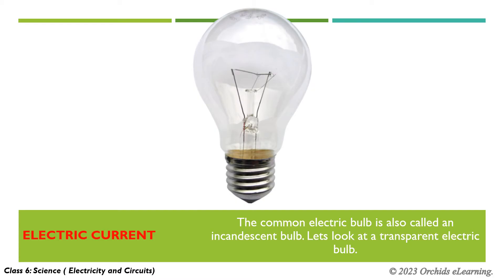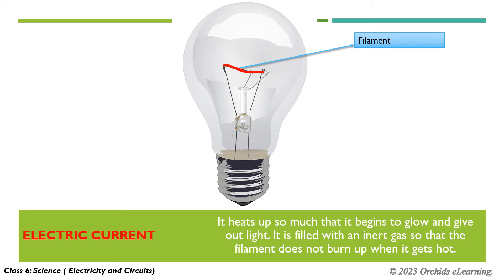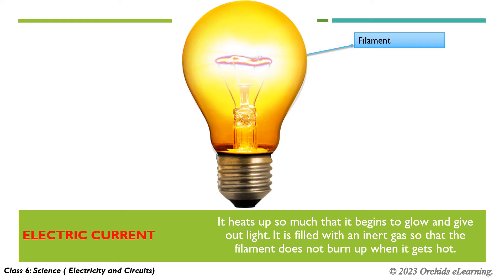The common electric bulb is also called an incandescent bulb. Inside a transparent electric bulb, you will see a thin filament — a very thin metal wire. The filament heats up when an electric current is passed through it. It heats up so much that it begins to glow and give out light. It is filled with an inert gas so that the filament does not burn up when it gets hot.